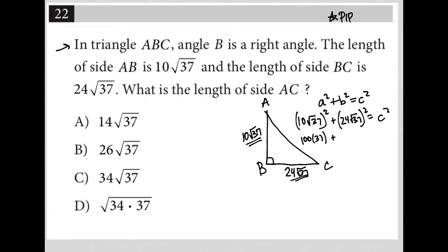plus 24 root 37 squared becomes 24 squared, which, going to my calculator, is 576. And then 37 square root 37 squared is just 37, and we have C squared there. So 100 times 37 is 3,700, so 3,700, plus 576 times 37 is 21,312, so 21,312 equals C squared.